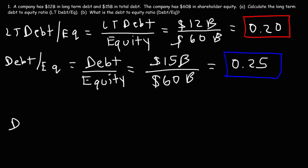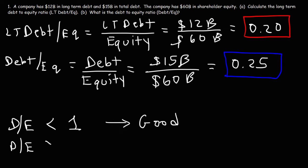Keep in mind, anytime the debt-to-equity ratio is less than 1 — and this is also true for the long-term debt-to-equity ratio — that means the company is doing okay or doing good. If the debt-to-equity ratio is significantly above 1, that's a bad thing; it indicates the company has a lot of debt. That's how you use these ratios when evaluating a company from a fundamental perspective.